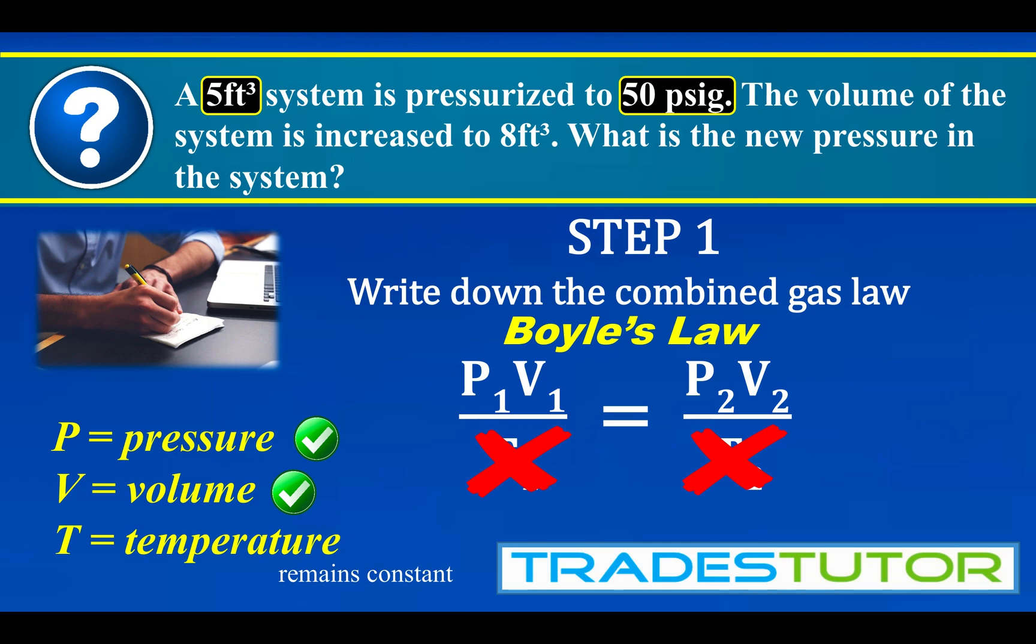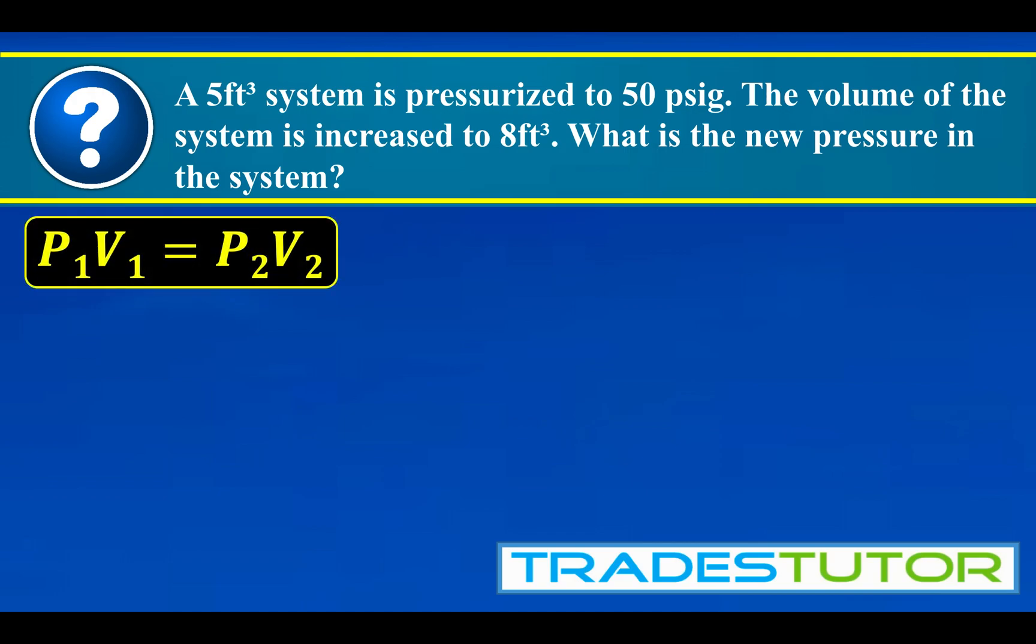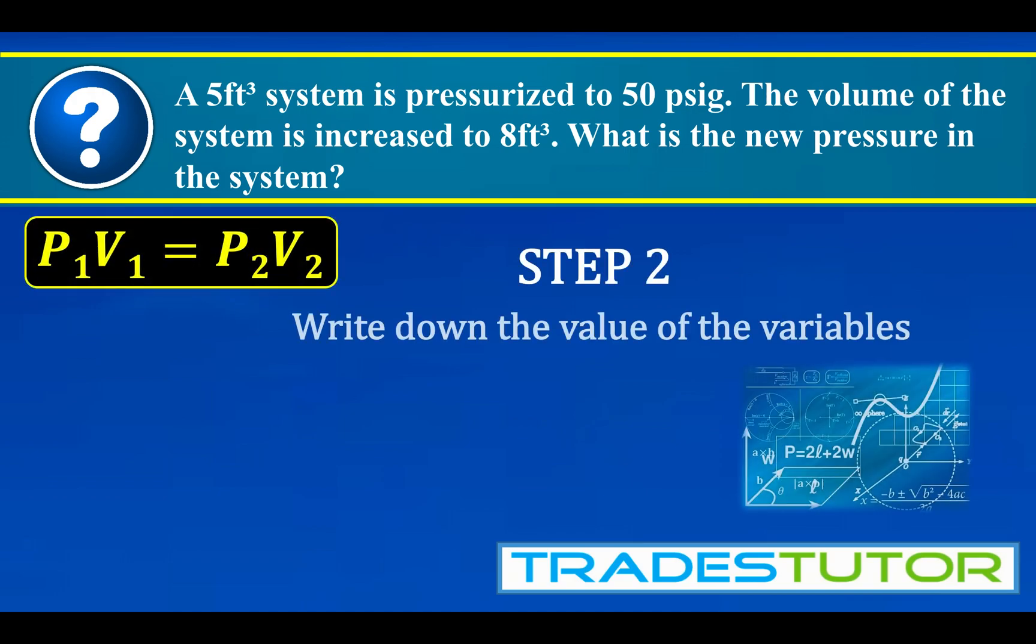And what we end up with is Boyle's law. P1V1 is equal to P2V2. All right, we'll put the Boyle's law up there. And then step two, we're going to write down the value of the variables. This is an important step because it starts to put it all in our head what we actually have.